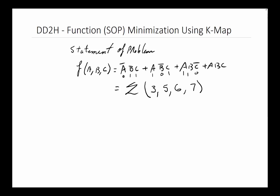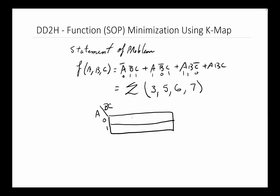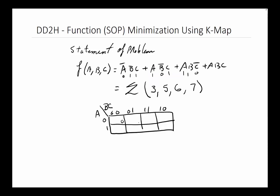Since we have three variables, we're going to use a KMAP to minimize it. Our KMAP will have two rows and four columns. We put A with zero on the top row and one on the bottom row. The columns use Gray code: 00, 01, 11, 10. So the squares correspond to minterms 0, 1, 3, 2 on the top row, and minterms 4, 5, 7, 6 on the bottom row.